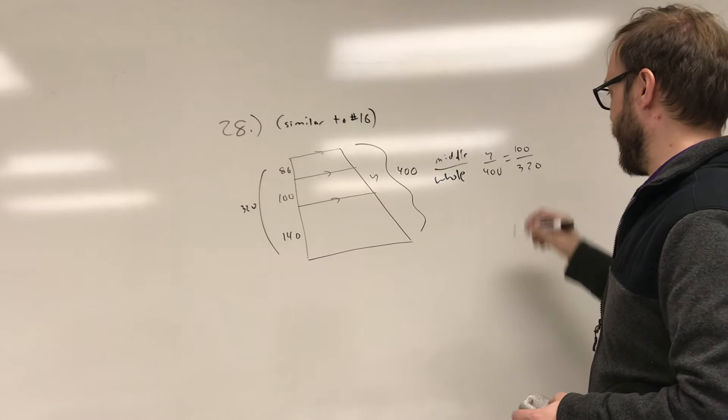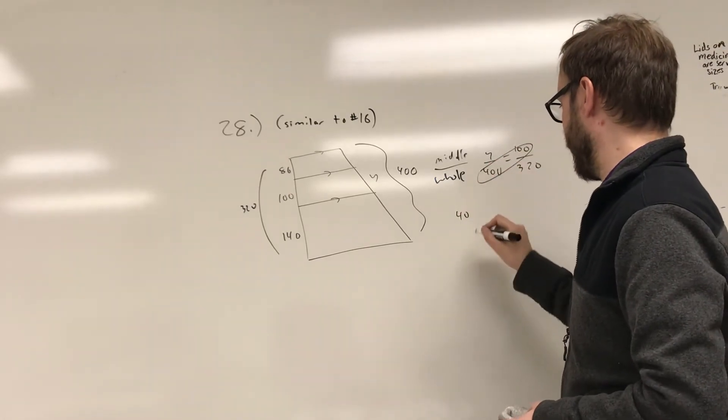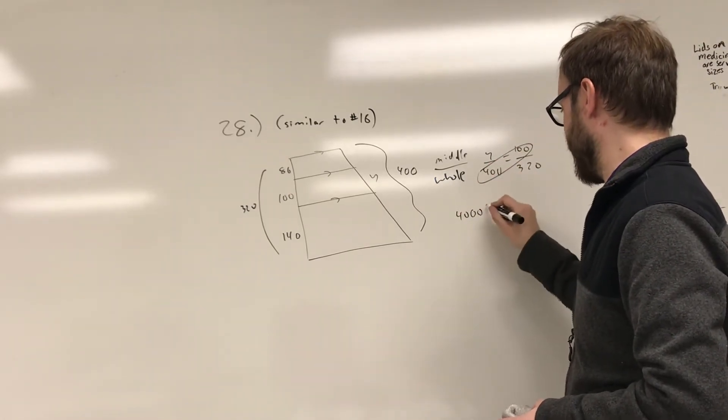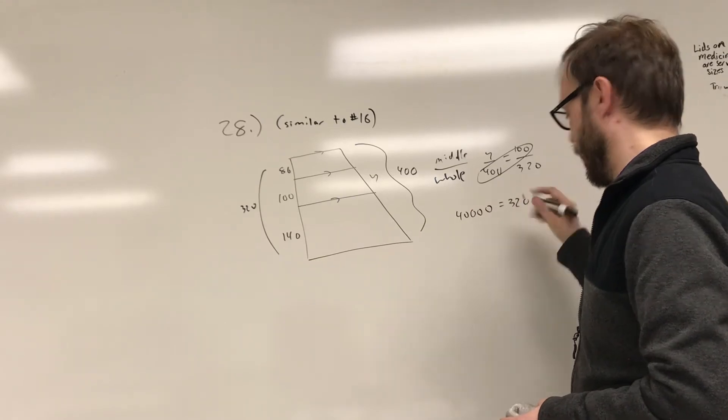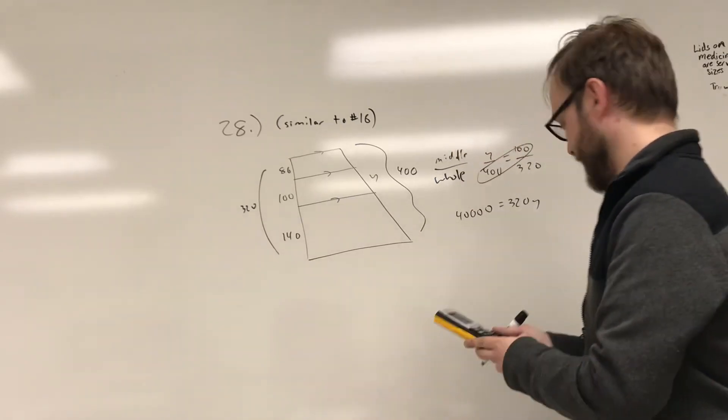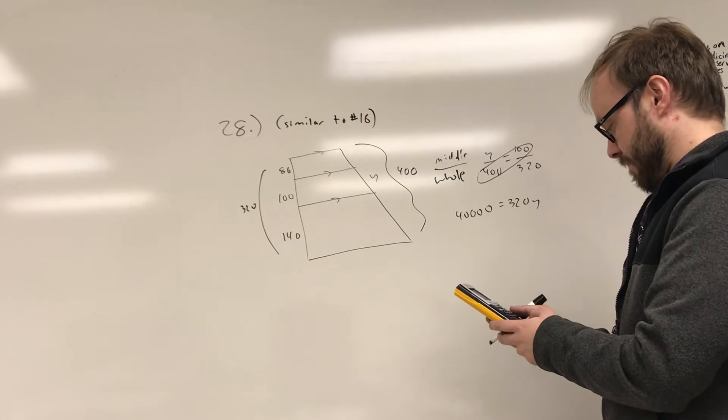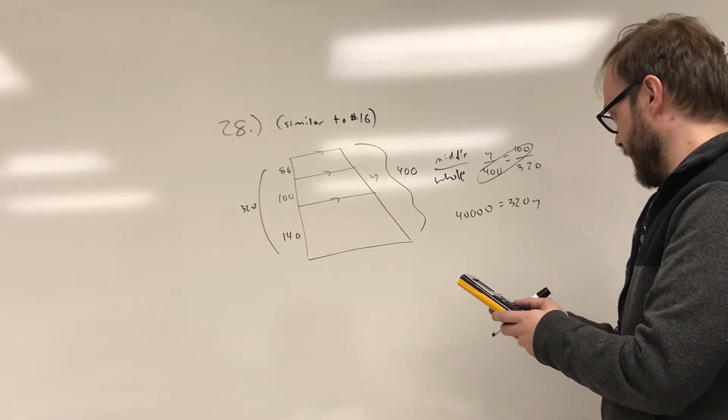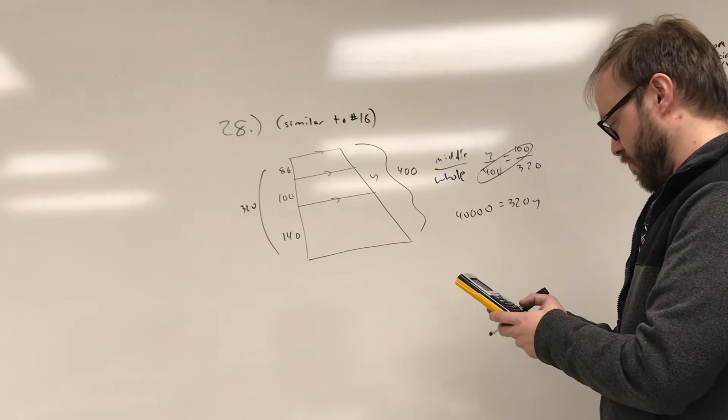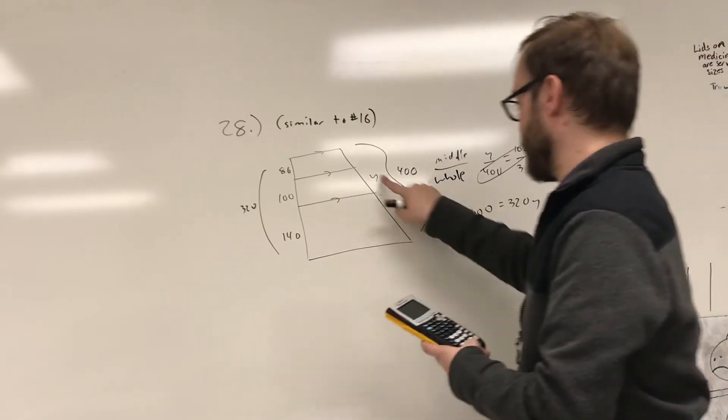And I don't quite know what that is, so let's cross-multiply there. And that's going to be 40,000 is equal to 320y. I have no idea what that is, so let's do that in the calculator. Let's see, 40,000 divided by 320. Looks like y is going to be 125.